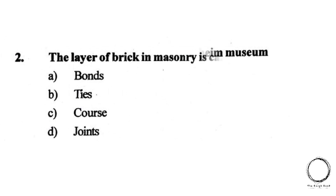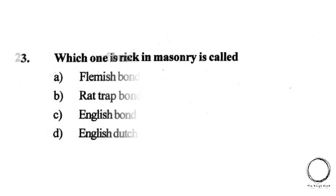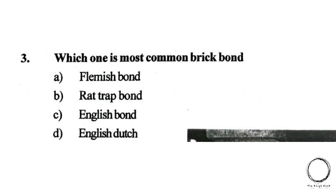Moving on. The layer of brick in masonry is called: A) Bonds, B) Ties, C) Courses, D) Joints. The right answer is C, Courses. Next question: which one is the most common brick bond? A) Flemish bond, B) Rat trap bond, C) English bond, D) English Dutch. The right answer is C, English bond.